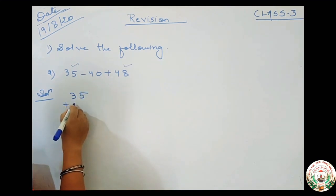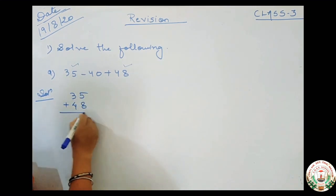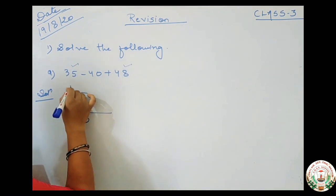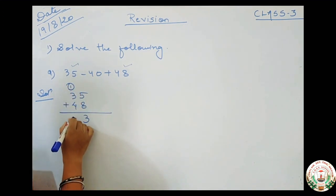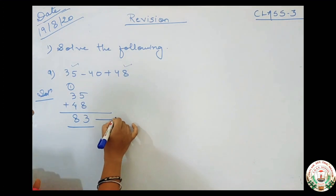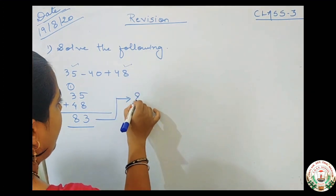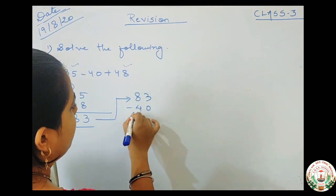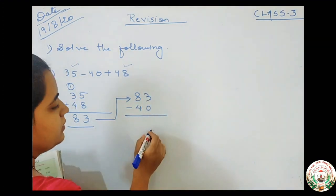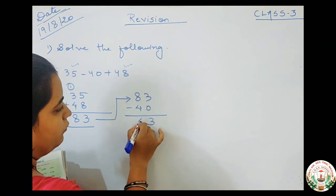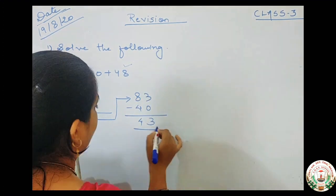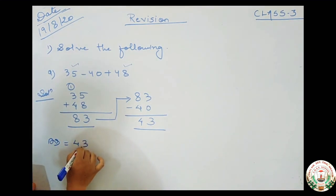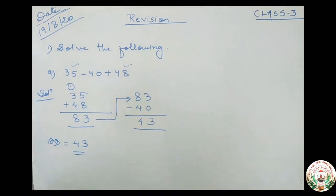First we add 35 plus 48. 8 plus 5 is 13, write 3 carry 1. 4 plus 4 is 8, plus the carry gives 83. Then we subtract the subtraction part: 83 minus 40. 3 minus 0 is 3, 8 minus 4 is 4. So your answer is 43.